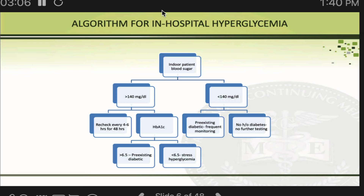If HbA1c is less than 6.5, that means the patient did not have diabetes earlier and whatever has developed is stress hyperglycemia. This is important from an insurance perspective also — if HbA1c is less than 6.5 and you write 'diabetes' in the notes, there could be insurance-related issues. It is better to write 'stress hyperglycemia,' indicating the patient did not have diabetes but developed hyperglycemia due to hospitalization, certain medications, or other reasons.